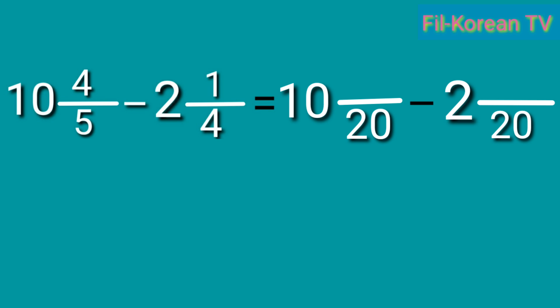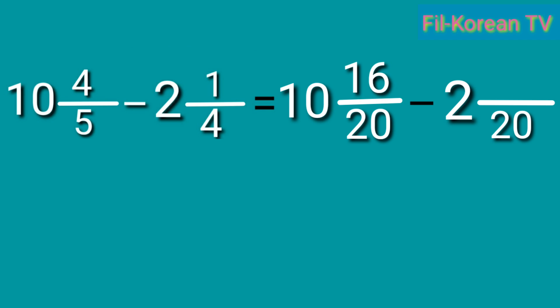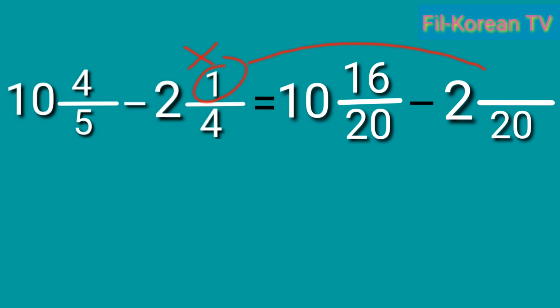Next, divide the LCD by the denominators. 20 divided by 5 equals 4; 4 times 4 equals 16. Next, for the subtrahend: 20 divided by 4 equals 5, times 1 equals 5. Okay, the fractions are now similar fractions, so we can subtract now. Subtract the numerators, subtract the whole numbers, and copy the LCD. So, let us answer.